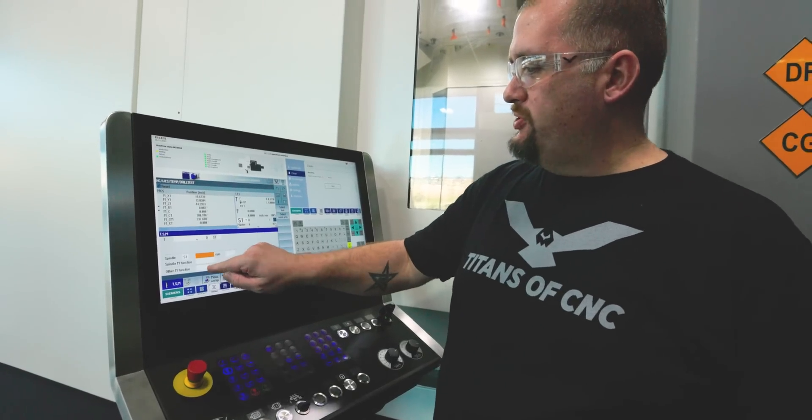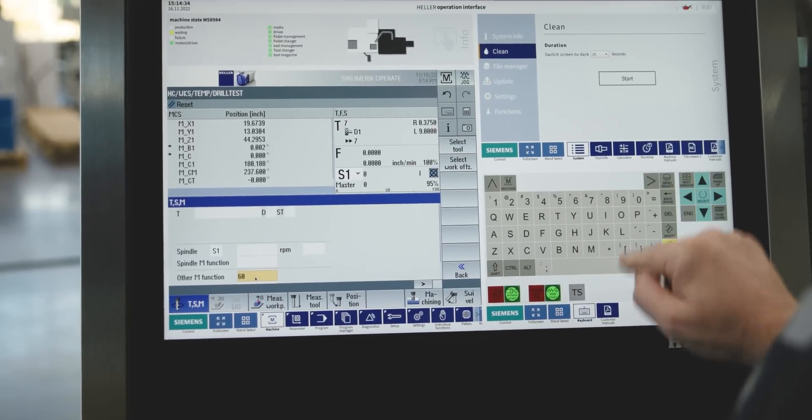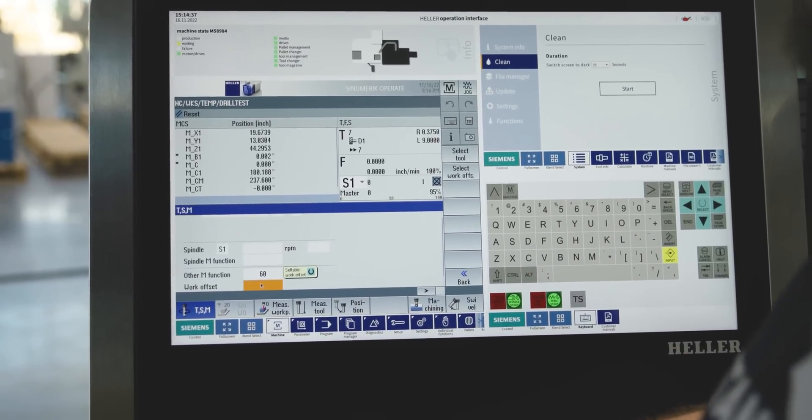Running any M codes is super simple. Just type the M code you want in, 60 for pallet change, input, cycle start.